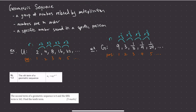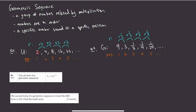Similarly to arithmetic sequences, geometric sequences have positions. The value 2 is stored in position 1, the value 4 is stored in position 2, the value 8 is stored in position 3, and so on. Remember the order matters, so that's why we have different positions.